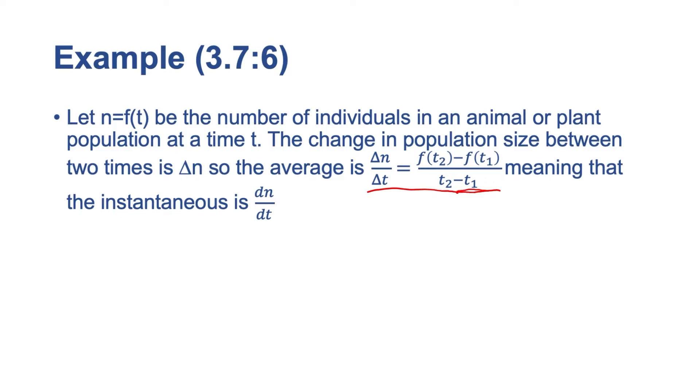If we just get rid of these deltas and change those to differentials, we'll just get dn over dt. And that will be our derivative, our instantaneous rate of change. Now they're telling us to consider f of t equals 2 to the t times n0. Find the rate if n0 equals 100 after 4 hours.